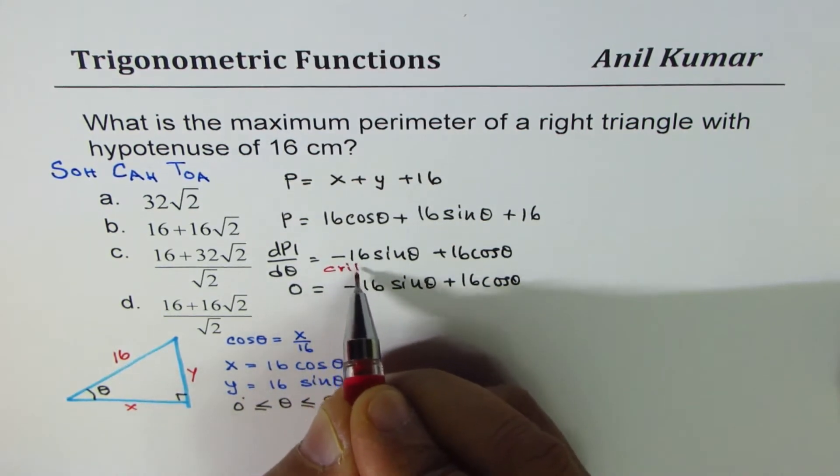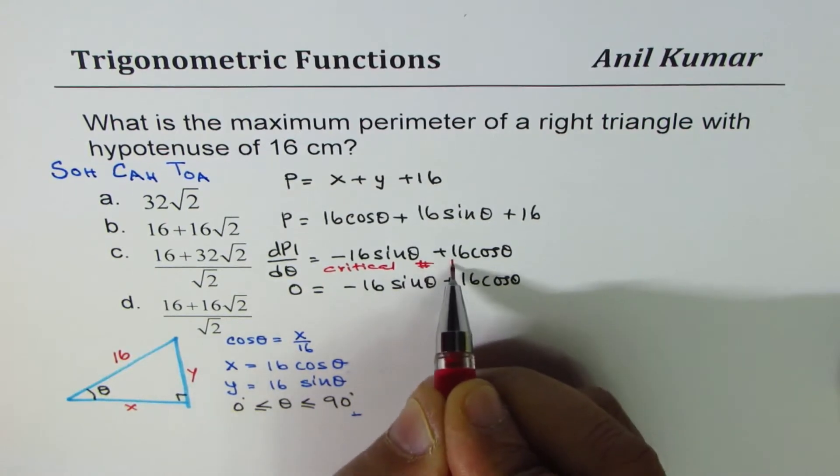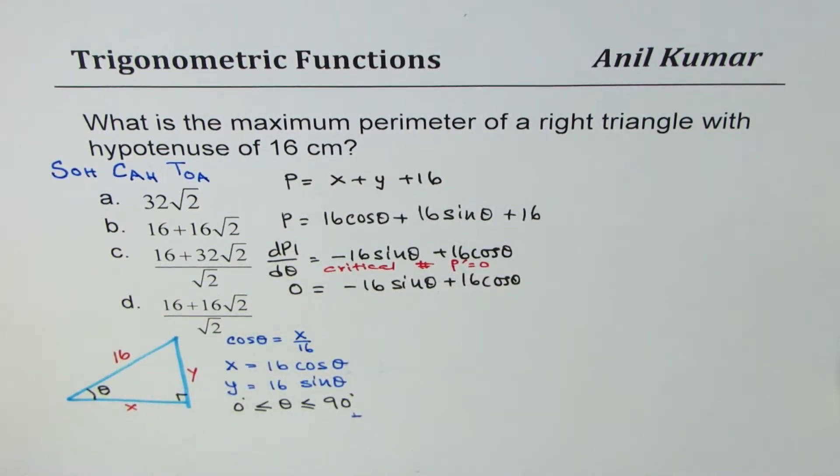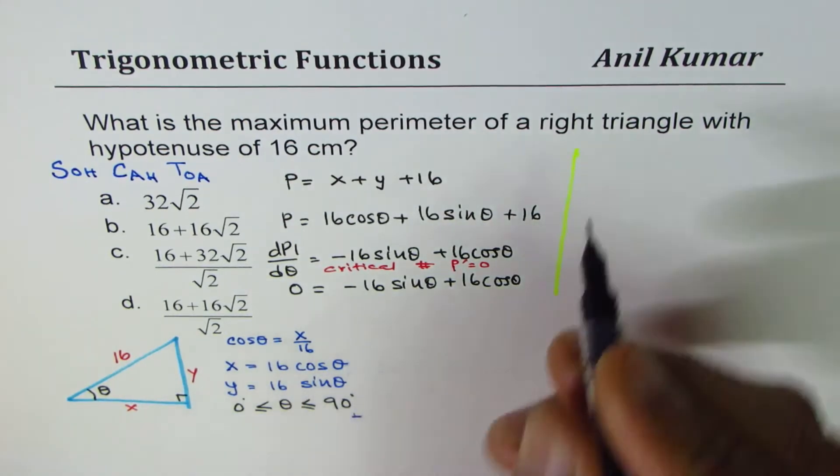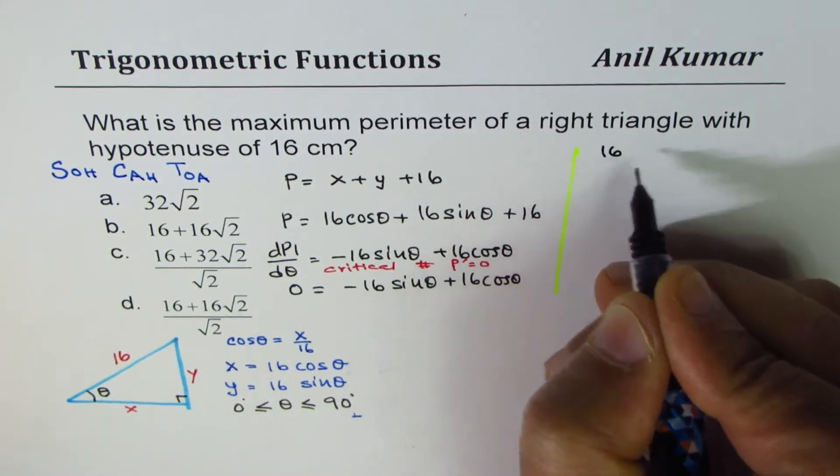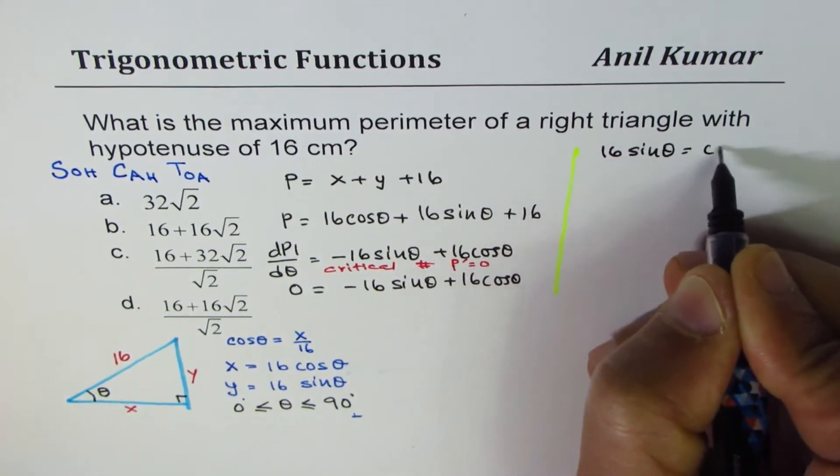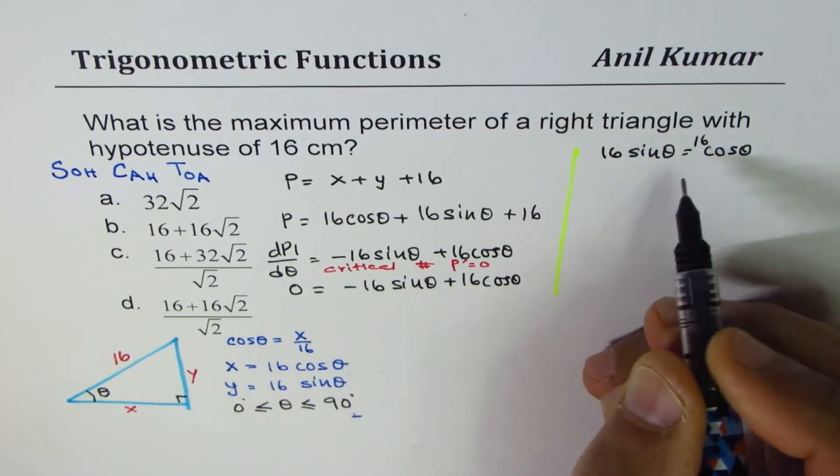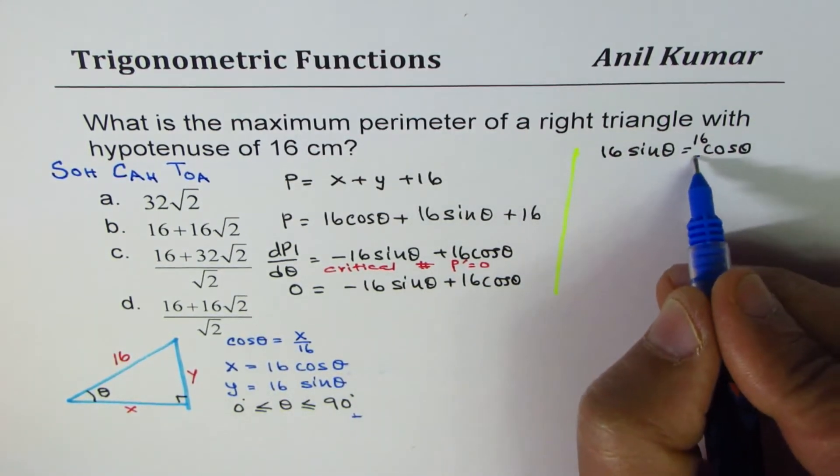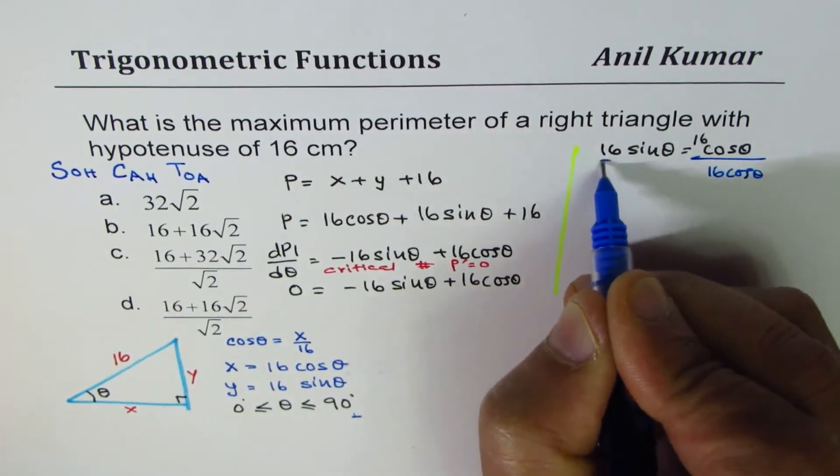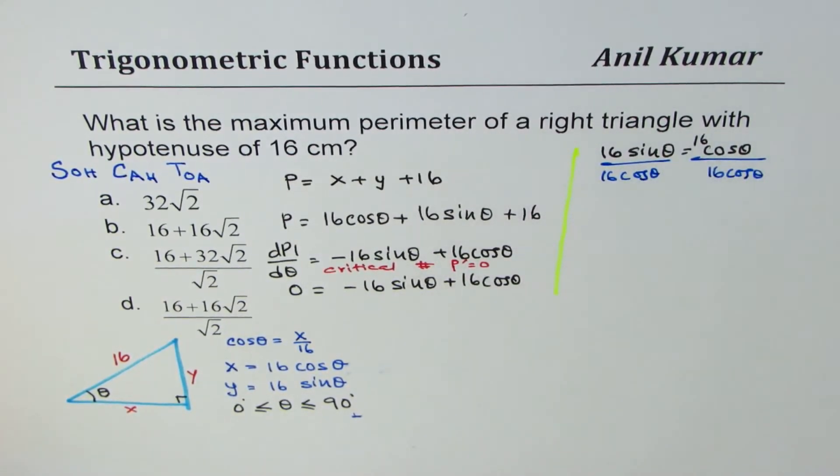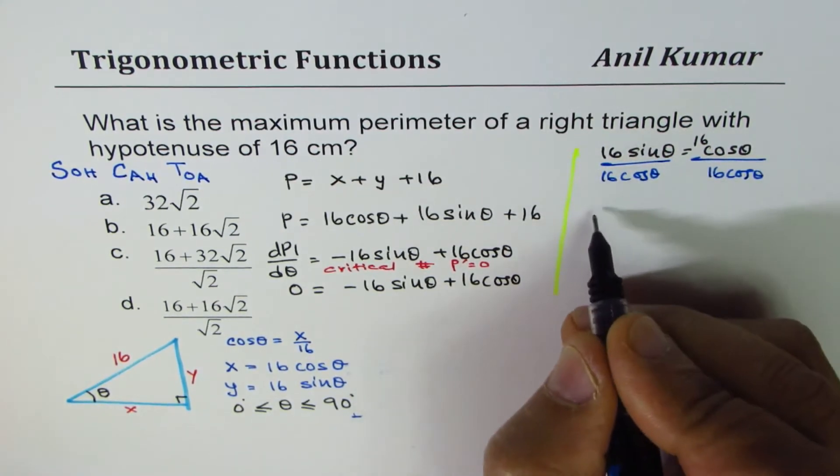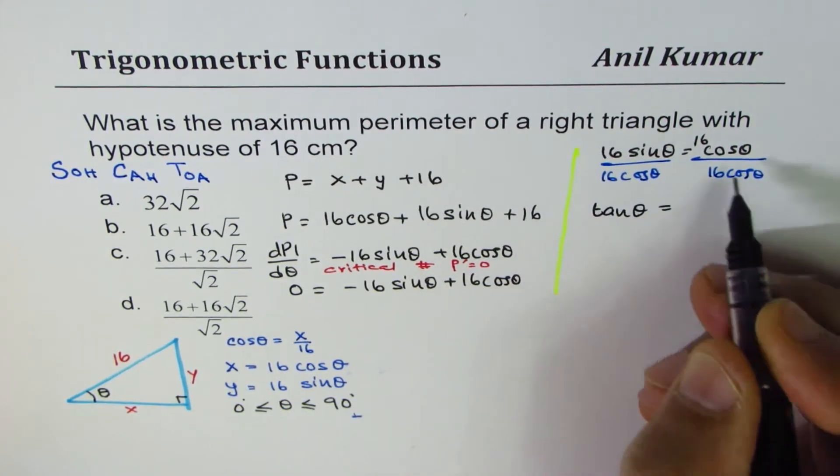For critical number, derivative should be 0, so let's equate this to 0. We get minus 16 sin theta plus 16 cos theta equals 0. Let's solve for theta. I'll rearrange the equation: 16 sin theta equals 16 cos theta. Dividing both sides by 16 cos theta, we get tan theta equals 1.